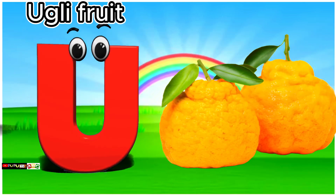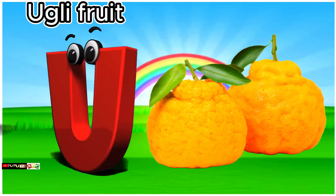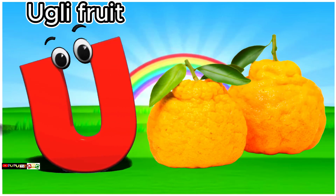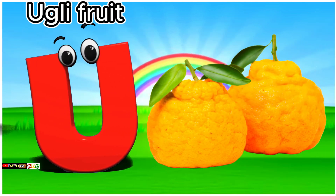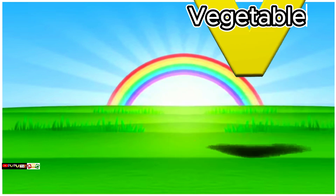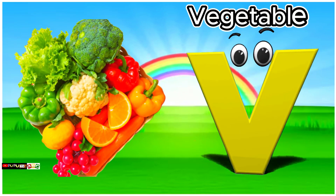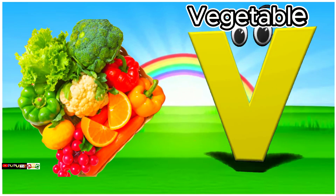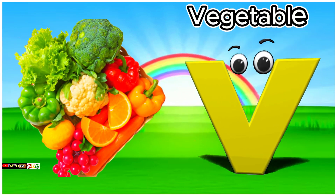U is for ugly fruit. U, U, ugly fruit. V is for vegetables. V, V, vegetables.